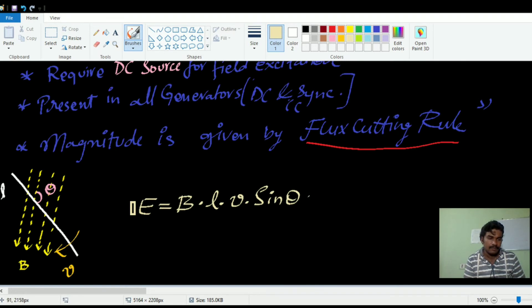Where B is the flux density, L is the length of the conductor. It is not the total length, but the effective length or active length of the conductor, also called LE.